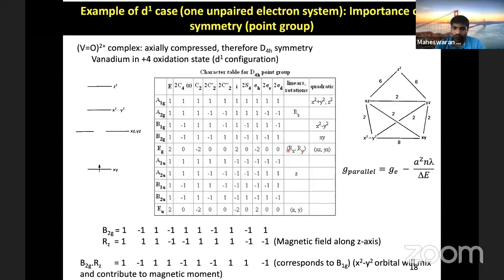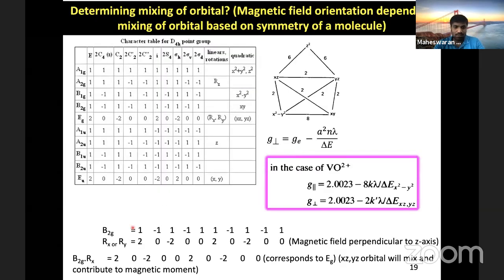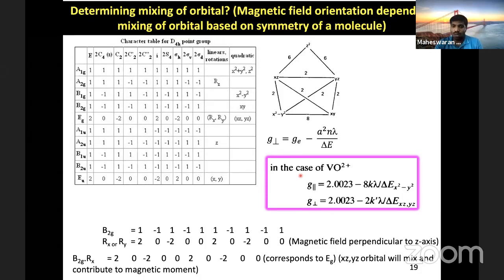For G perpendicular, the magnetic field is applied perpendicular to the Z-axis (RX and RY directions, corresponding to Eg). Taking B2g × Eg gives the same Eg representation, which corresponds to the XZ and YZ orbitals. So applying the field along the X or Y axis causes the unpaired electron in XY to mix with the XZ or YZ orbital, and the coefficient value is 2. That's why N = 2 is used in the G_perpendicular equation.